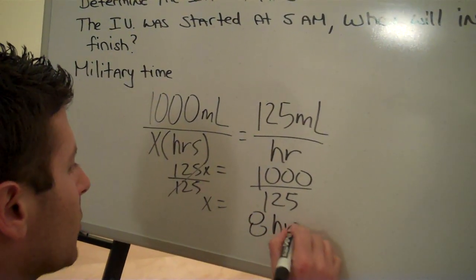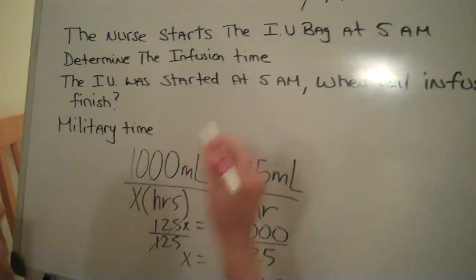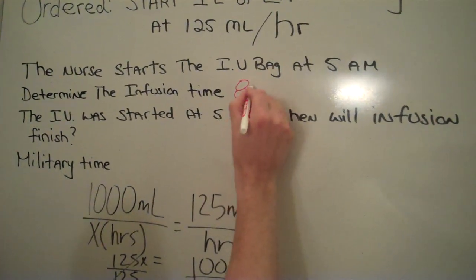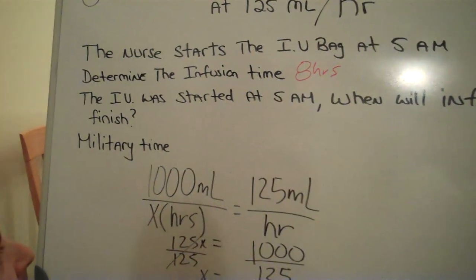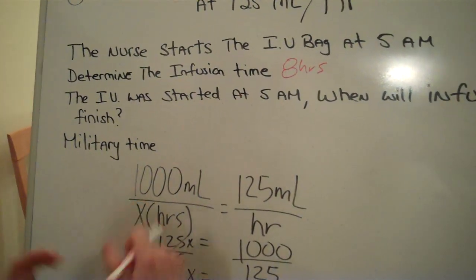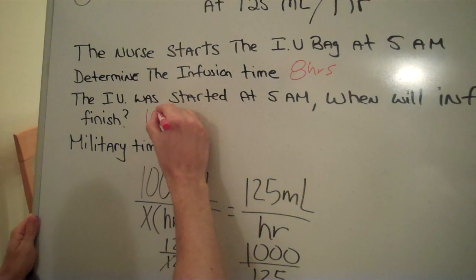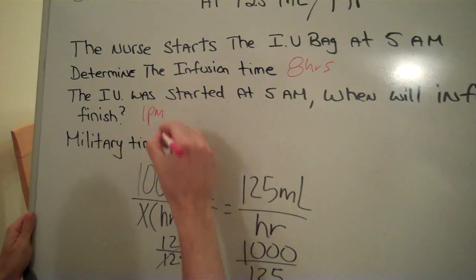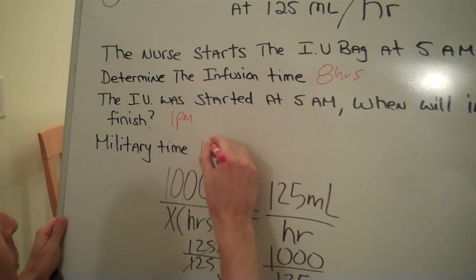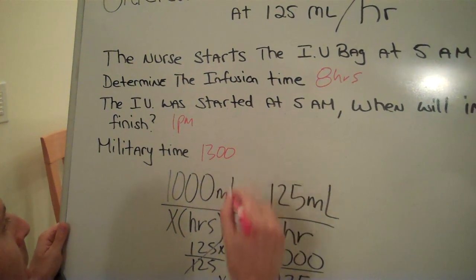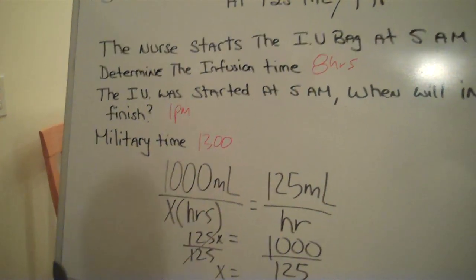And that's our hours. So our answer is eight hours. Eight hours from 5 a.m. brings us to 1 p.m. in the afternoon, and in military time that would be 1300 hours, and that is our problem.